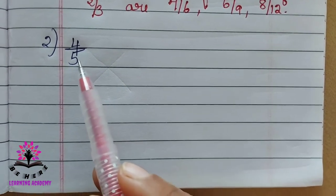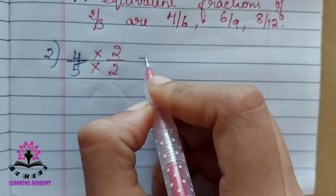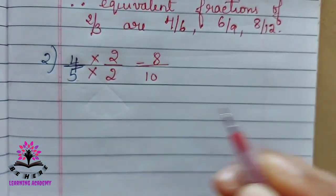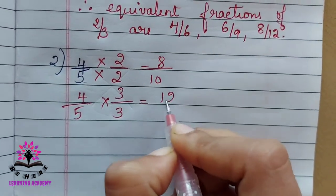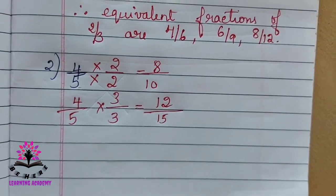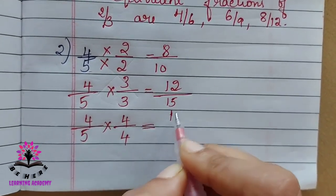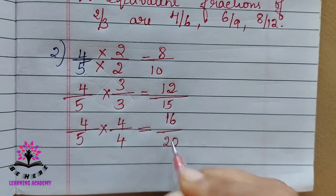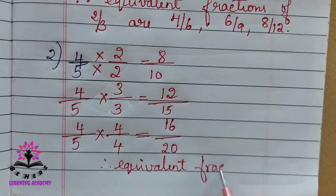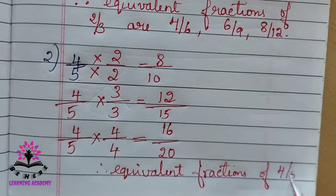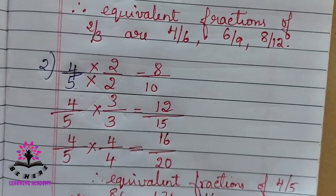See the second question — you have to find the equivalent fractions of 4/5. First, multiply by two: four twos are eight, five twos are ten, so 8/10. Again, 4/5 multiplied by three: four threes are twelve, five threes are fifteen, so 12/15. Again, 4/5 multiplied by four: four fours are sixteen, five fours are twenty. Therefore, equivalent fractions of 4/5 are 8/10, 12/15, 16/20.